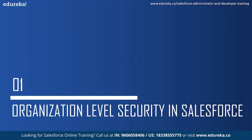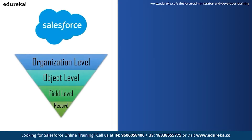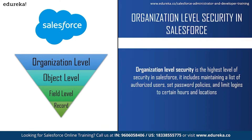There are four levels of security in Salesforce: organization level, object level, field level, and record level security. Organization level security is the highest level. It includes maintaining a list of authorized users, setting password policies, and limiting logins to certain hours and locations. It secures the data from unauthorized users. Important features include restriction of IP addresses, password policies, and login access.